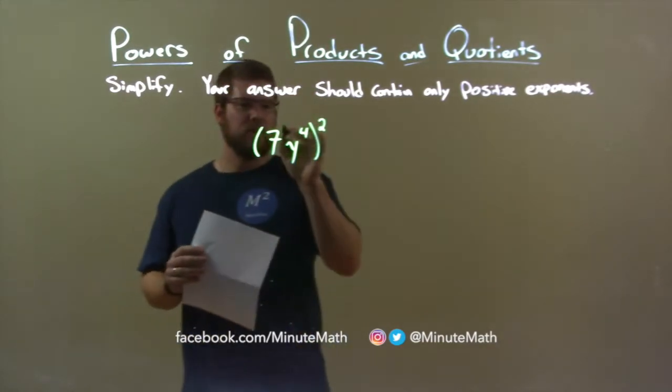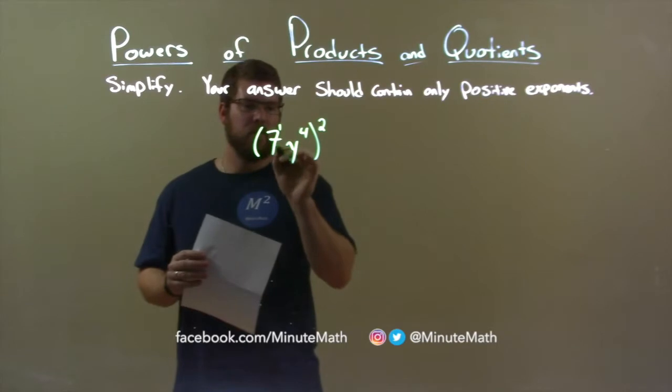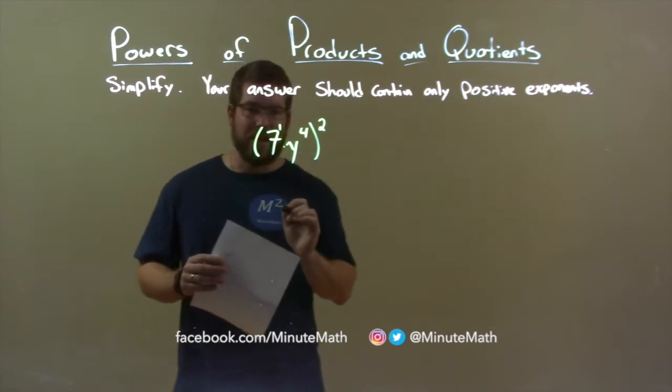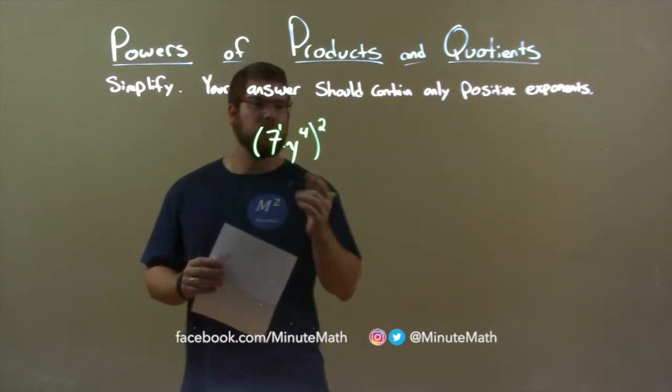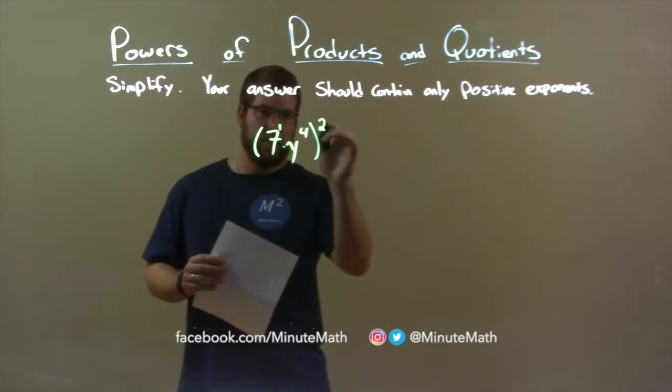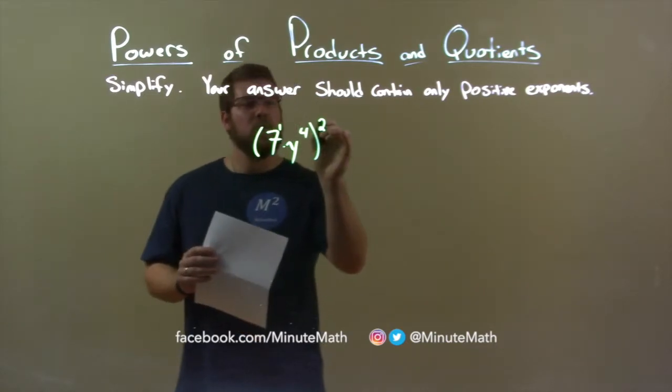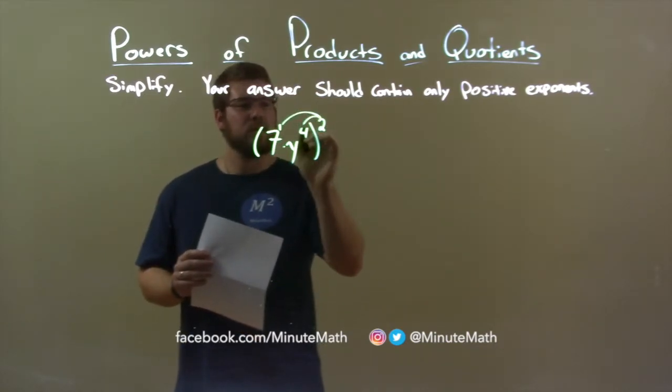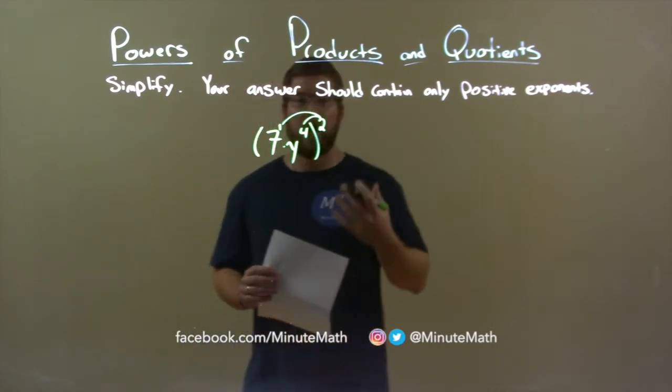Well, 7 is really 7 to the first power, and between 7 and the y, that's multiplication going on. To distribute this squared power up there, outside the parentheses, we do so by multiplying 2 to each one of these exponents.